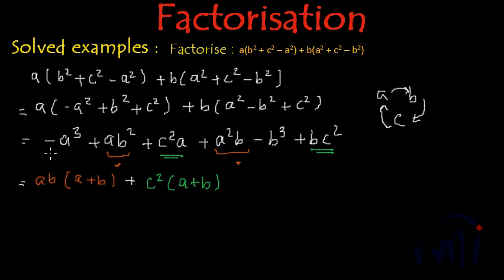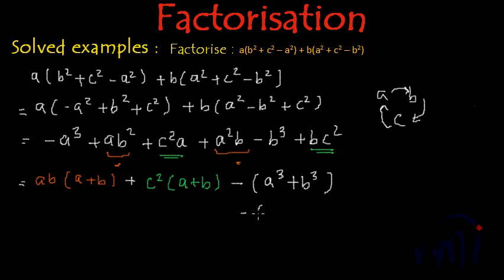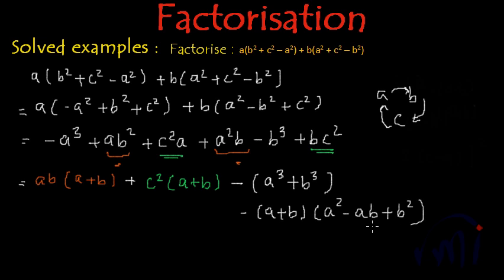We are left with two terms: minus A cubed and minus B cubed. Taking minus common gives us minus times A cubed plus B cubed. And A cubed plus B cubed can be written as A plus B multiplied by A squared minus AB plus B squared.